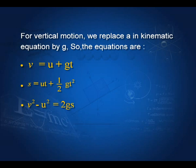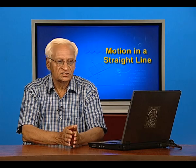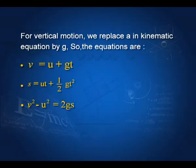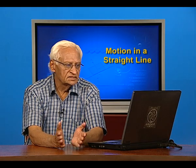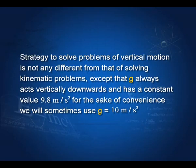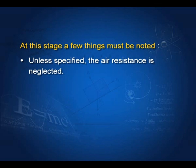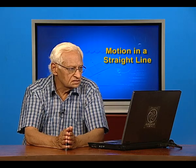For vertical motion, we take the same kinematic equations. All we do is replace 'a' by 'g', the acceleration due to gravity. We get: v = u + gt, s = ut + ½gt², and v² − u² = 2gs. The value of g for most places on earth is 9.8 m/s², but to illustrate problems here, we take g = 10 m/s². Unless specified, air resistance is neglected, so the motion of the body is free with no resistance of any kind.